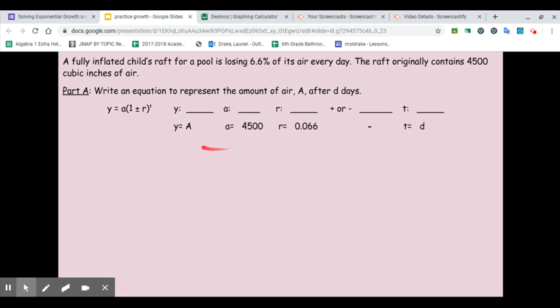What we should have come up with is y, the final value. They're asking us to use capital A for air, so instead of y, we're going to use A. The initial value is 4,500. r is 0.066. That came from this percent: 6.6% changed to a decimal.